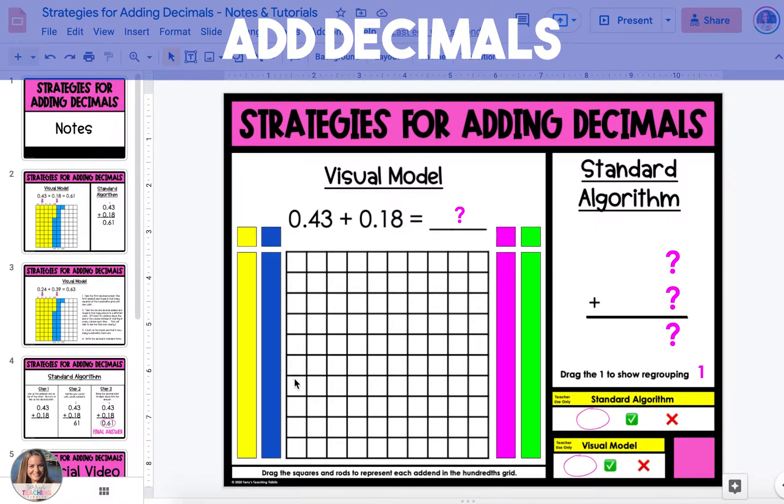To shade in 43 hundredths, we're going to grab one of the colored rods on the side of the slide and drag it over the model. The rod will fill in one of the columns, which is 1 tenth, or 10 hundredths.